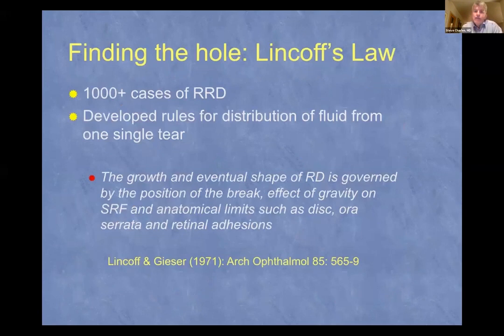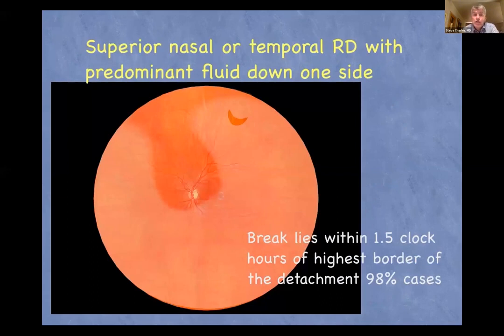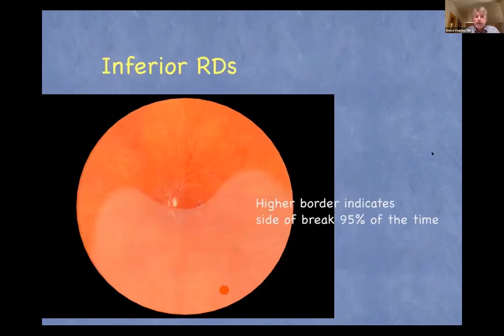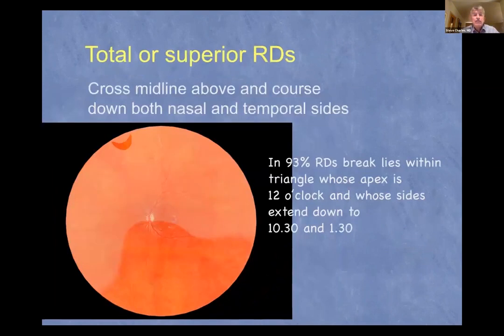Harvey Lincoff's 1971 paper looked at a thousand cases and the distribution of sub-retinal fluid relative to the tears. Broadly speaking, if you have a supero-nasal or temporal detachment with fluid predominant on one side, the break will lie within one and a half clock hours at the highest border of the detachment in the majority of cases. With an inferior retinal detachment, the higher border of fluid indicates the side of the break. With a total or superior detachment where fluid crosses the midline above and courses down both sides, the break is usually in a triangle whose apex is at 12 o'clock and whose sides extend to 10:30 and 1:30.